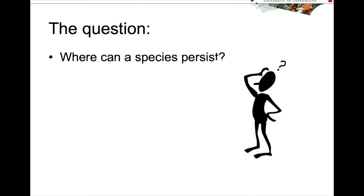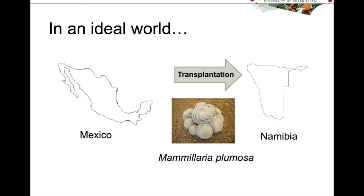In an ideal world, this question is fairly easy to answer. You might take a species of cactus like this Mammillaria plumosa from Mexico and transplant it to Namibia and see if it can grow and reproduce.